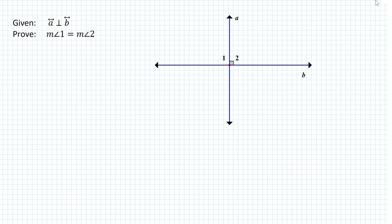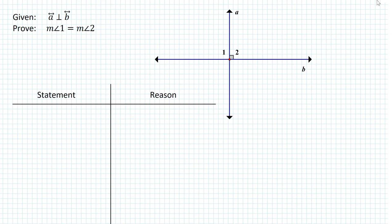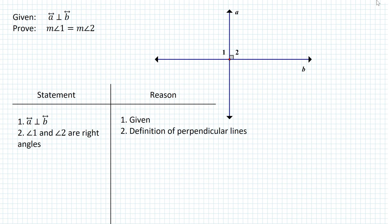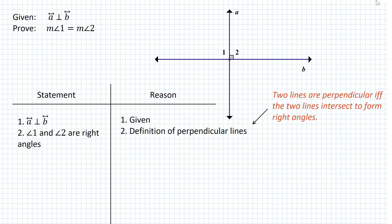Let's look at another example that leads us into another theorem. Say you have two lines A and B that are perpendicular — that's the given. How do we prove that measure of angle 1 is equal to measure of angle 2? Let's construct a statement-reason table and place the first given in it. What can we conclude from all the definitions we know so far? If you look at angle 1 and angle 2 respectively, what can you say about those two angles?